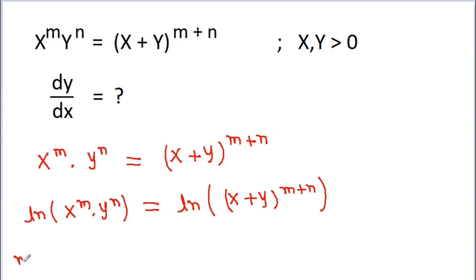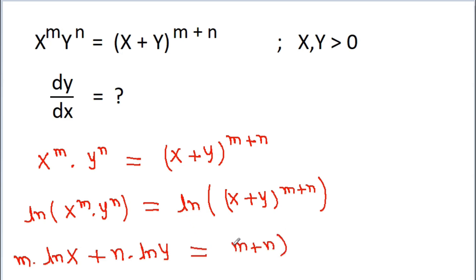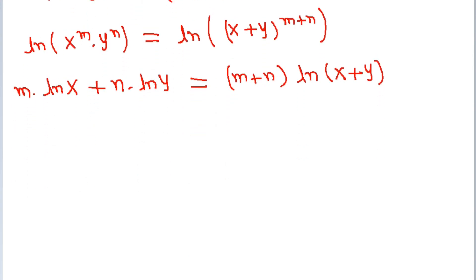Now ln of x to the power m into y to the power n will be m times ln of x plus n times ln of y, and this is equal to m plus n times ln of x plus y.